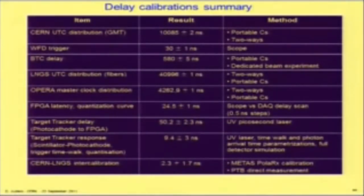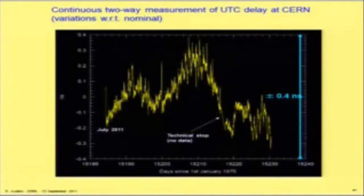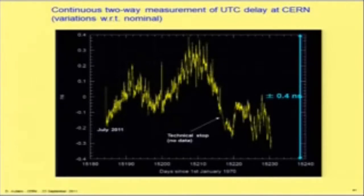There are other effects — the position of the event in the strip, the dependence of trigger delay on pulse height, and quantization effects — accounted for by simulations using parameterizations of strip time responses derived from laboratory measurements. There is a table which includes all the delays, and what is interesting is that everything has been measured with different techniques. All the chain delays were measured with both the portable caesium clock and the two-way measurement. The two-way measurement for UTC time distribution at CERN has been kept permanently running since July 2011, showing variations within plus or minus 0.4 nanoseconds — well within our systematic accuracy.